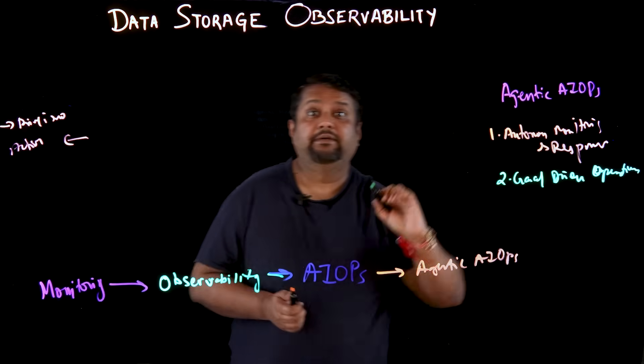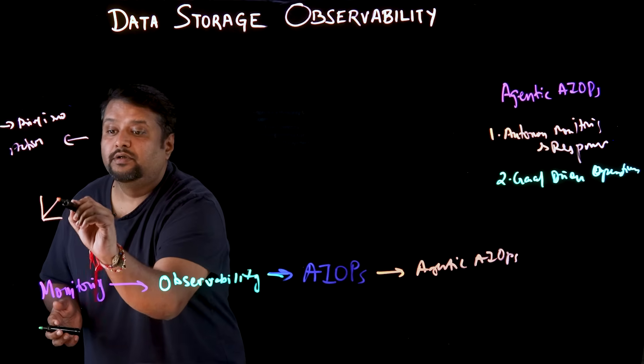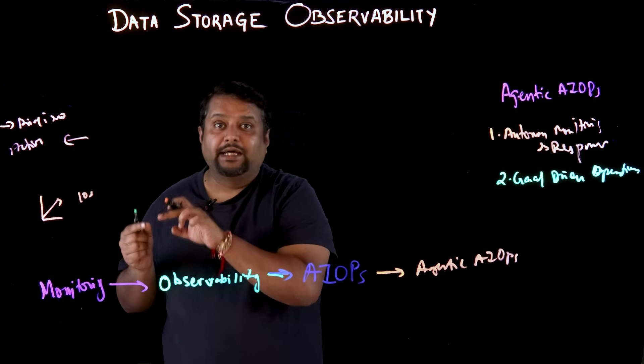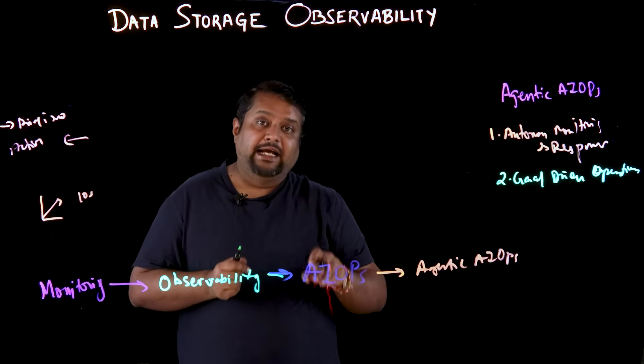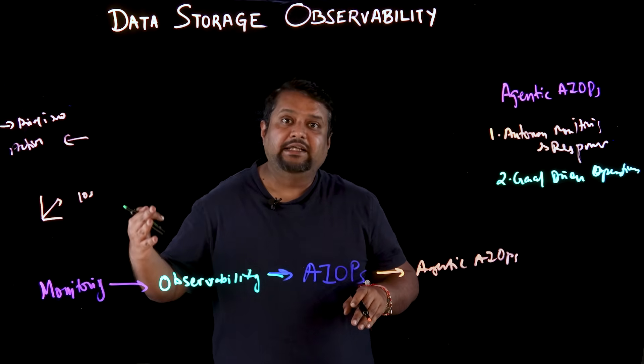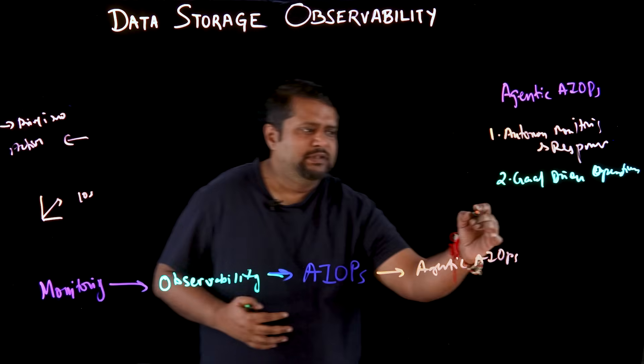The second agentic AI ops use case is goal-driven operations. An admin can define the goals needed from the observability tool, and when those goals are reached the relevant agent starts responding accordingly. For example, if the admin needs latency to stay below 10 milliseconds, every time it exceeds that threshold the agent auto-corrects, so the admin does not have to sit through thousands of alerts and take those actions manually.